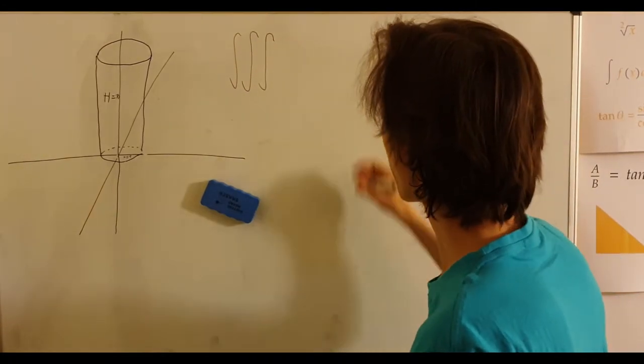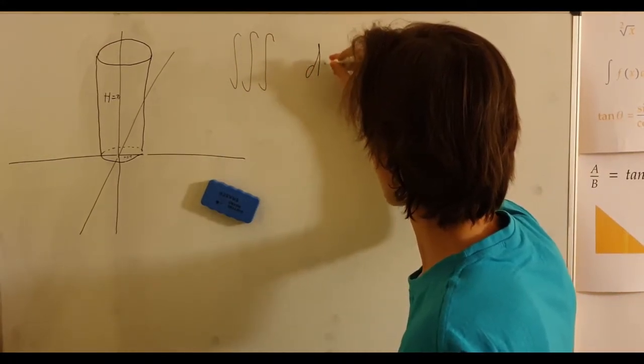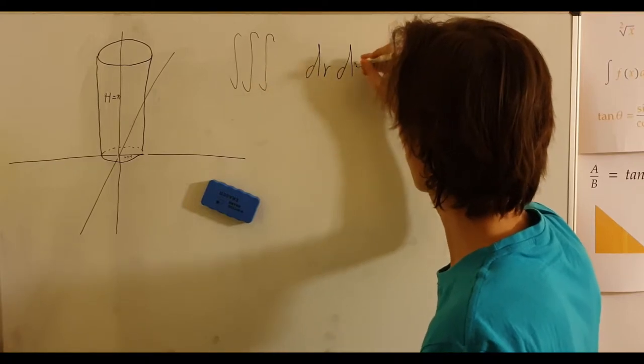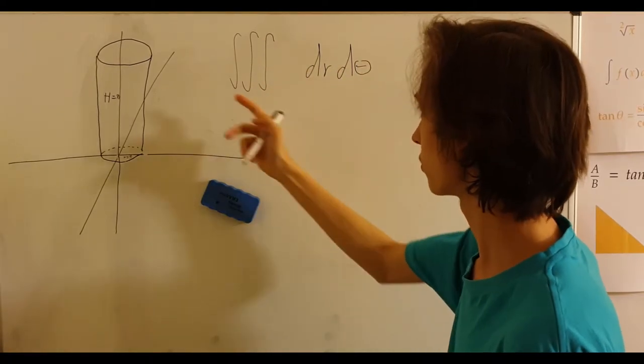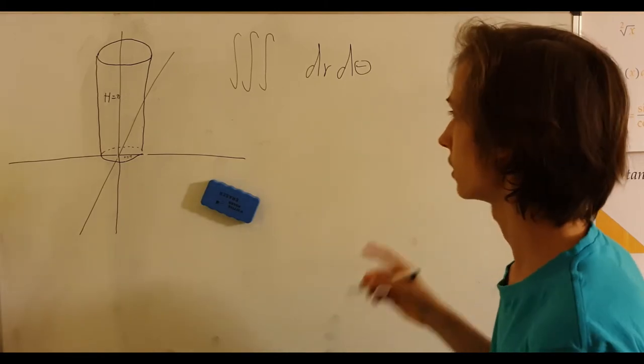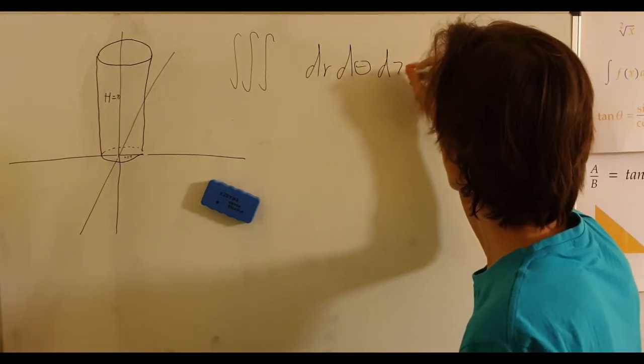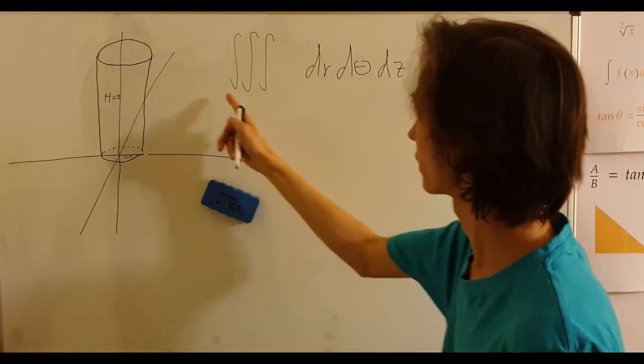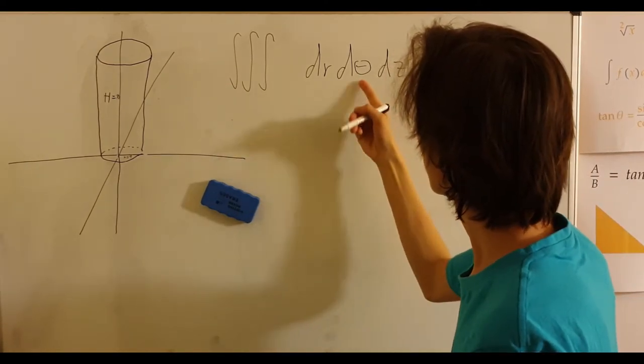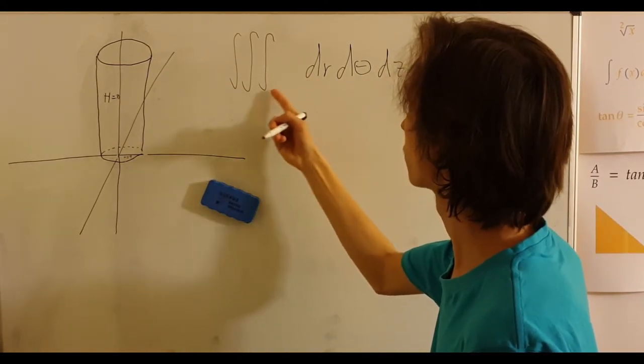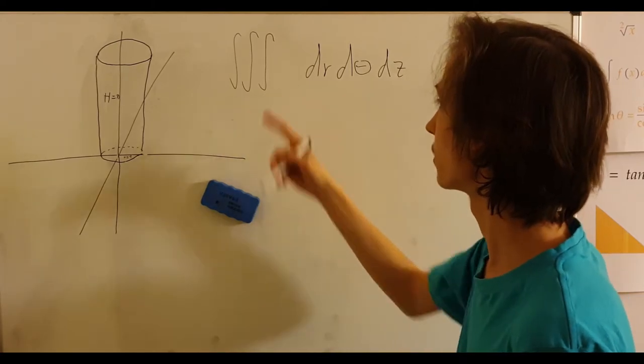It will be in respect to dr, but also d theta. This will be polar coordinates with a double integral. And because it's a triple integral, we will also have dz, where dz is connected to the outer one, d theta to the middle one, and dr to the inner one.